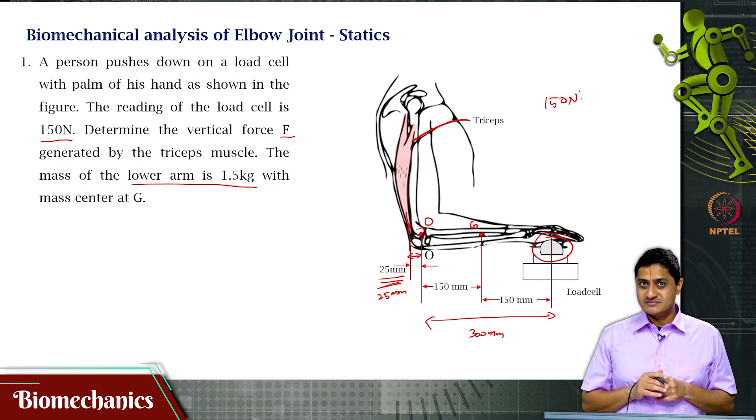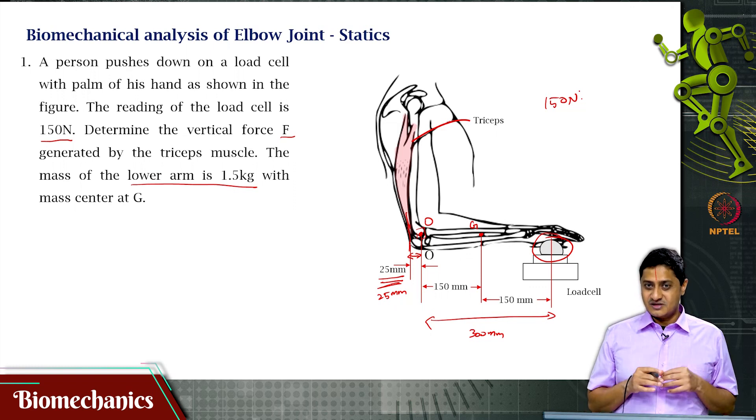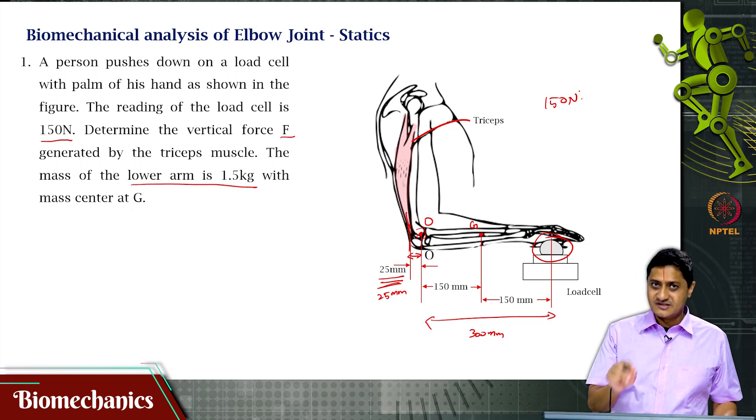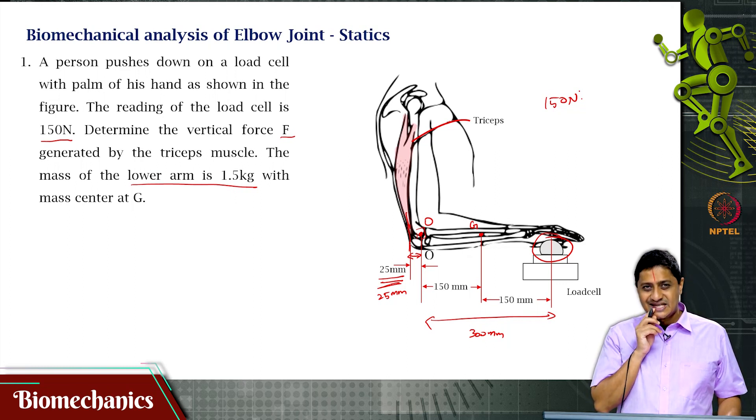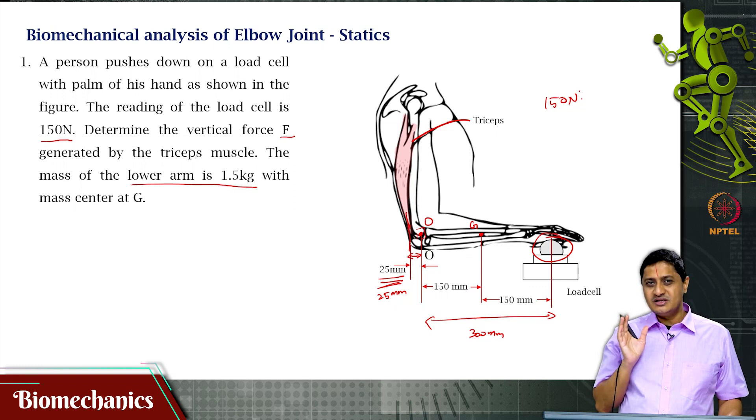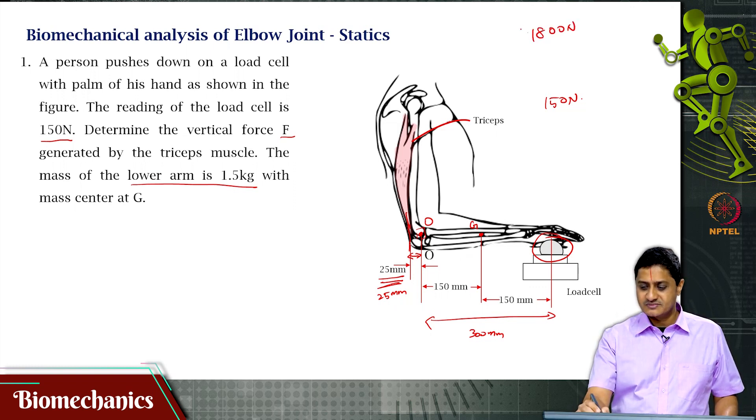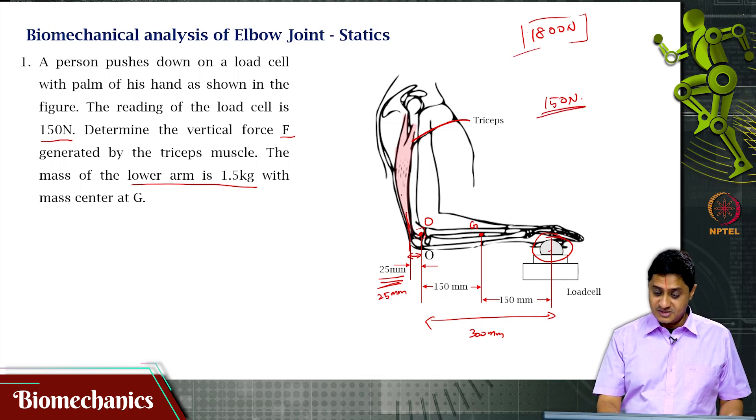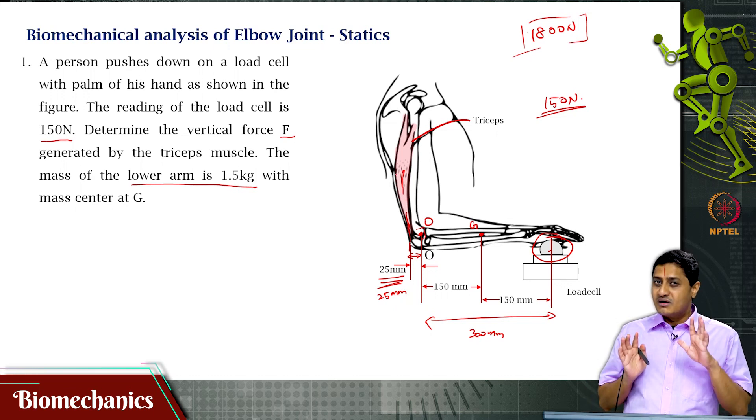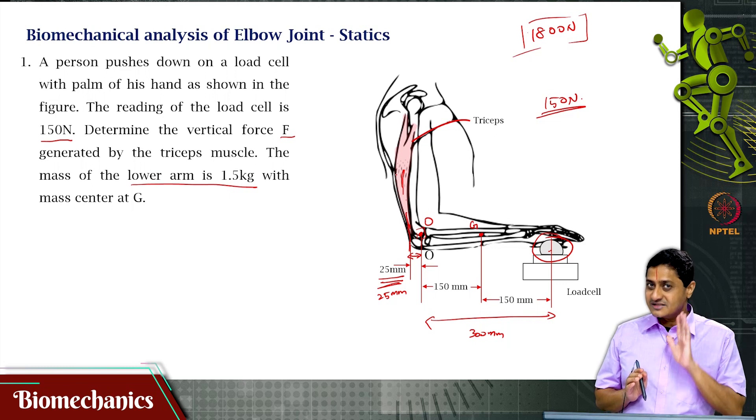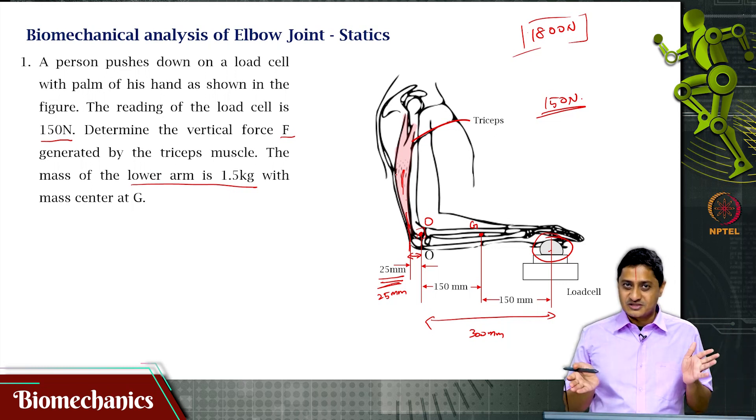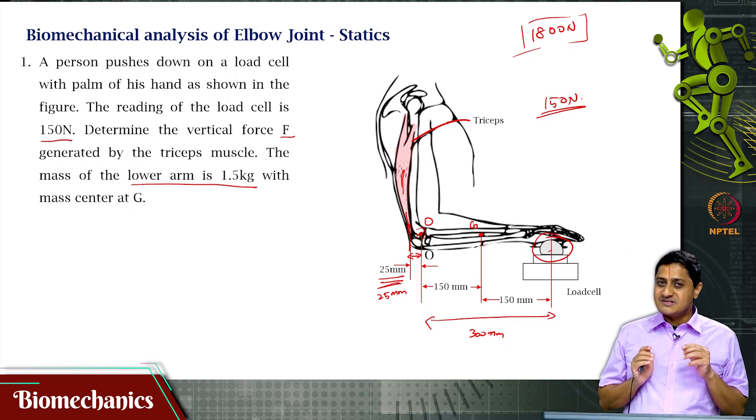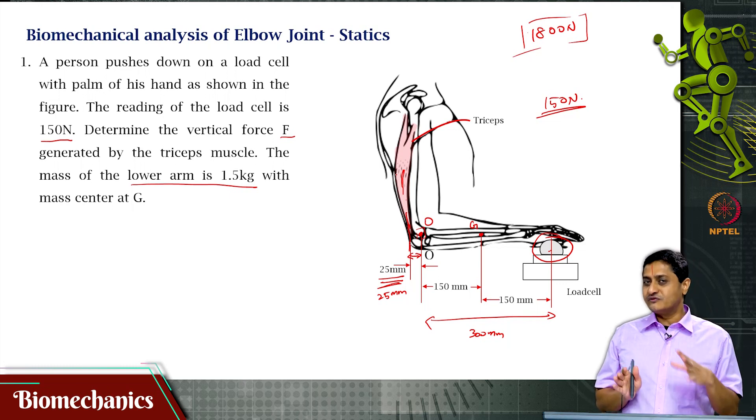If all goes well, assuming that there is nothing else, the solution should be close to 1800 newtons. 150 newtons is what I am measuring here. It must be that this one must be able to produce approximately 1800 newton or in the vicinity of 1500 to 2000 newton is where I am expecting the solution.